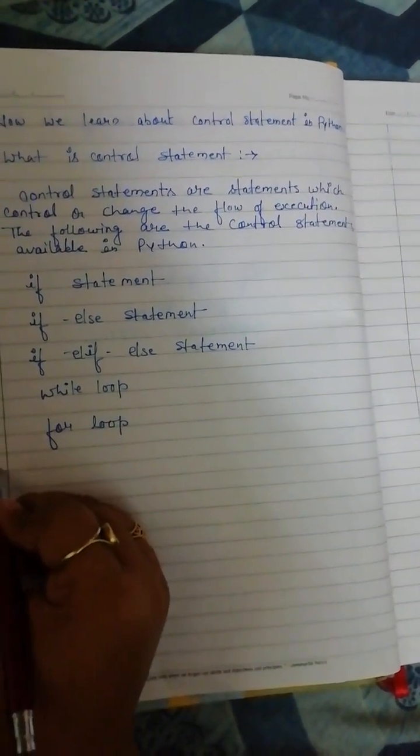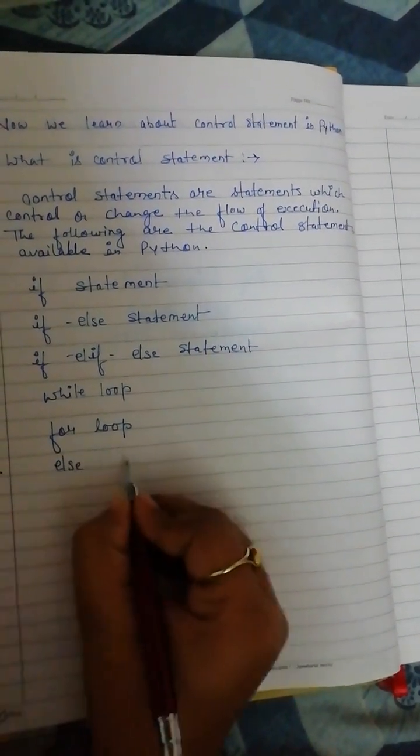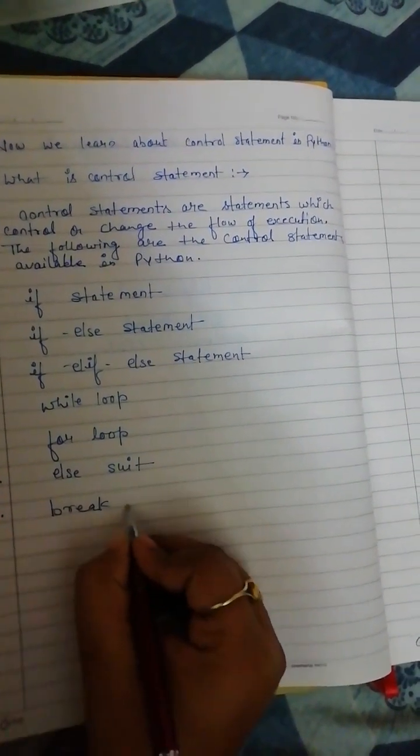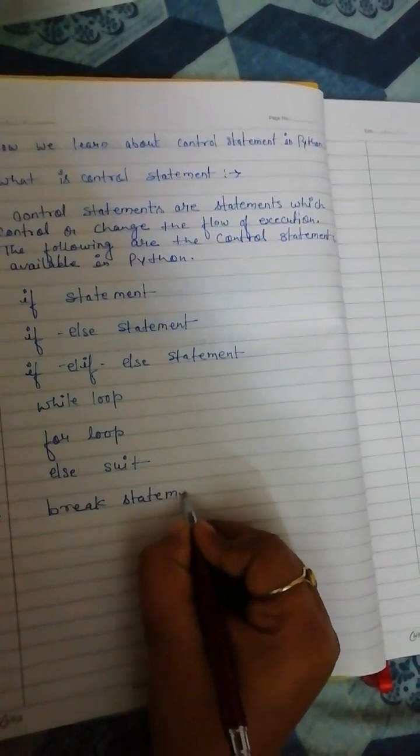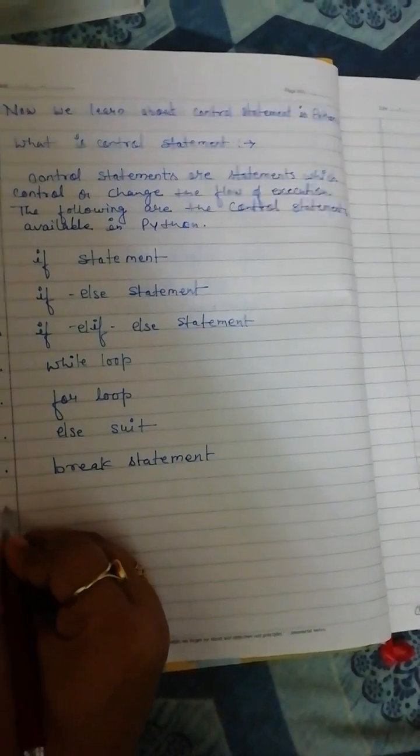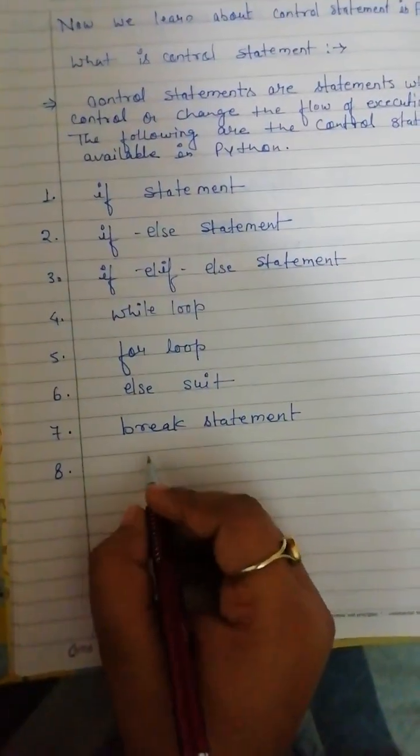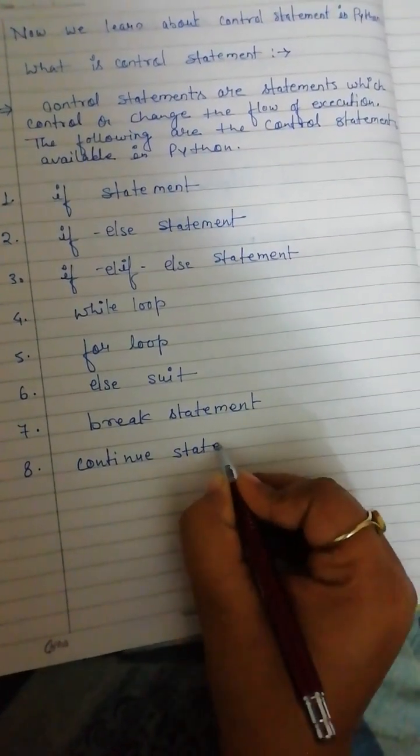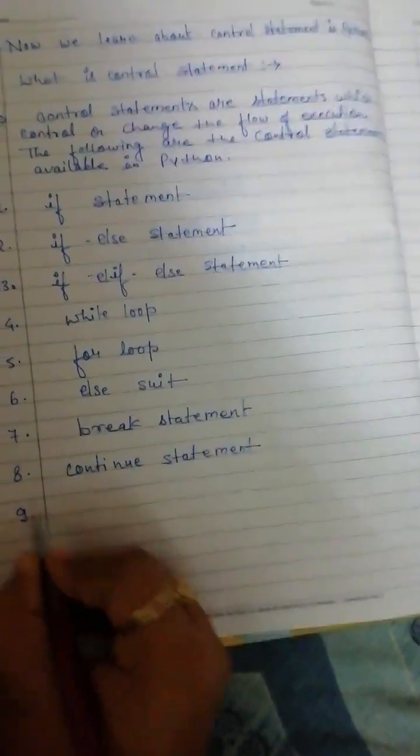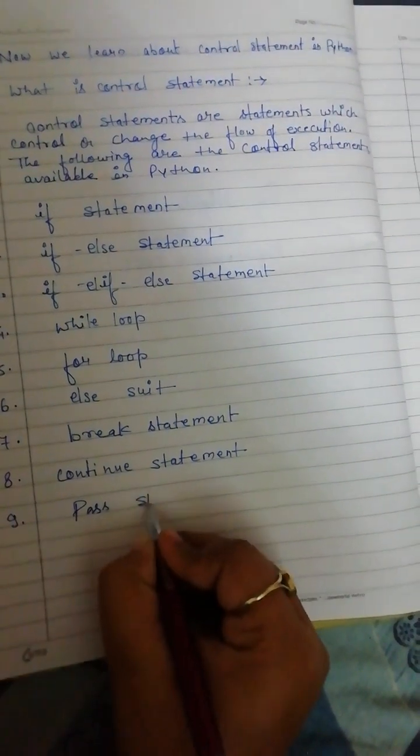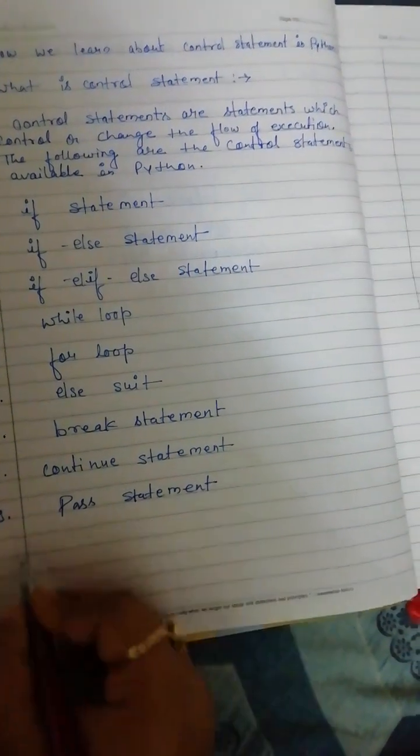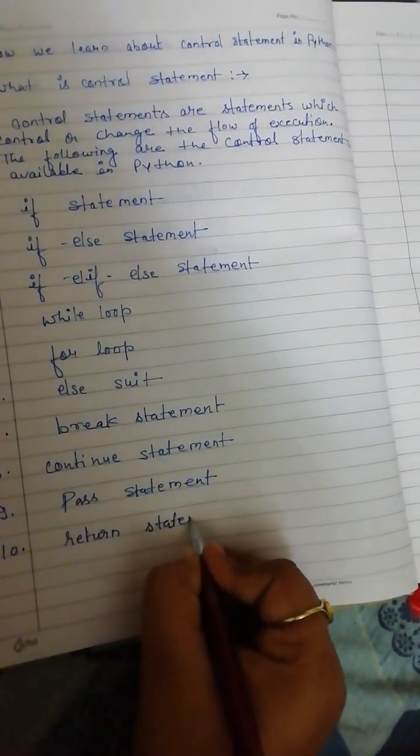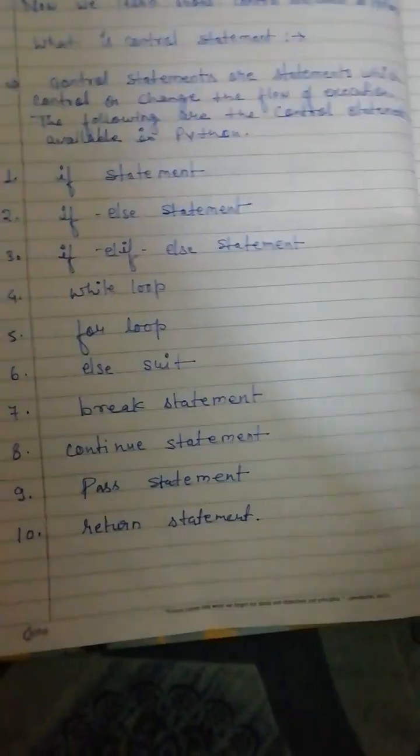Sixth is elif statement, seventh is break statement, eighth is continue statement, ninth is pass statement, and tenth is return statement. So there are ten types of statements.